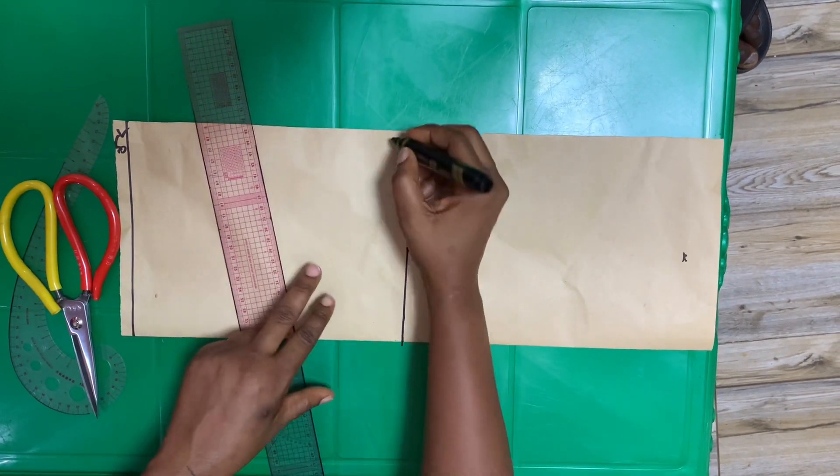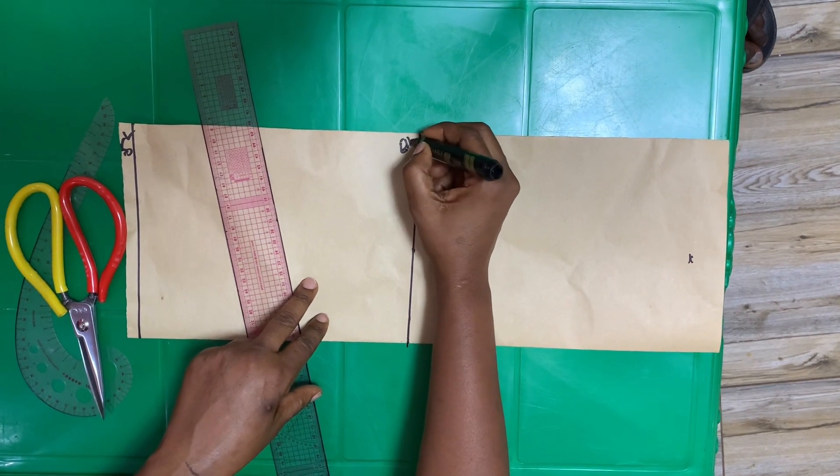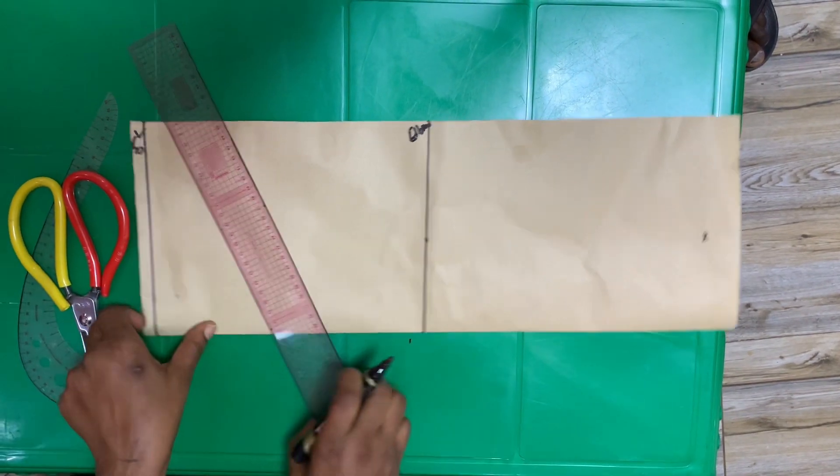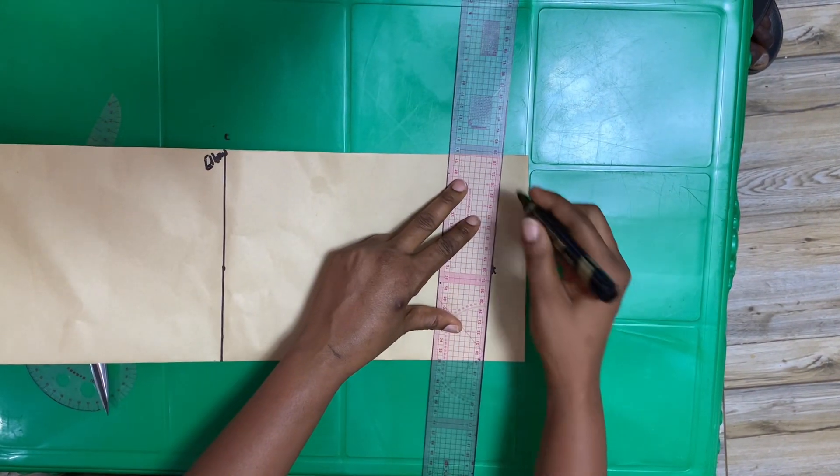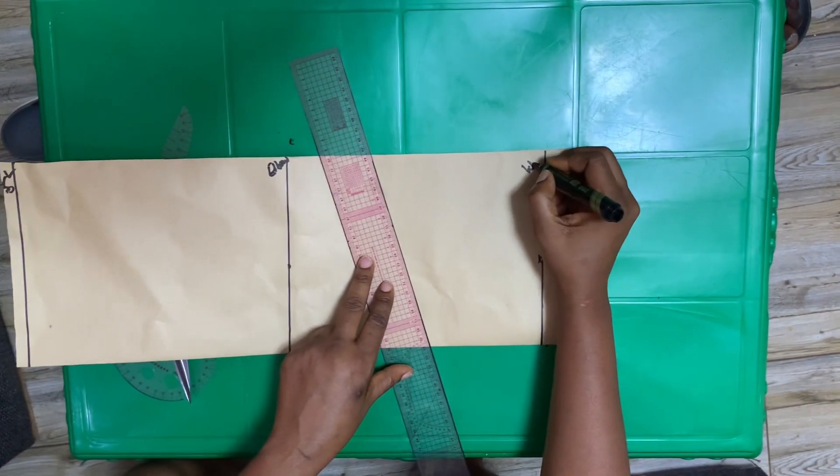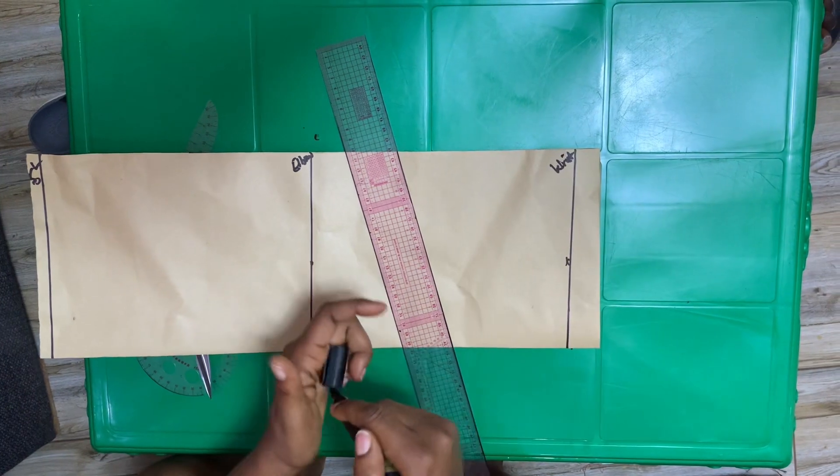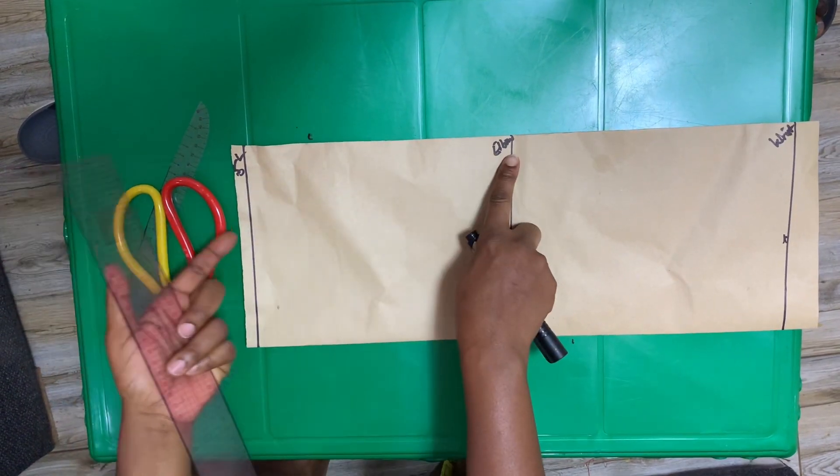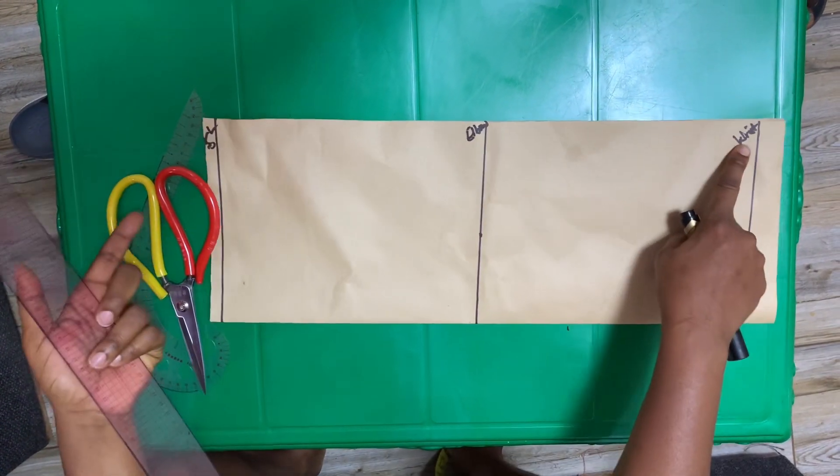I will mark those out. Next, I will draw a straight line for the elbow so you can see shoulder to elbow is this, and the next one is wrist. Elbow is 10 inches, wrist is 20 inches.